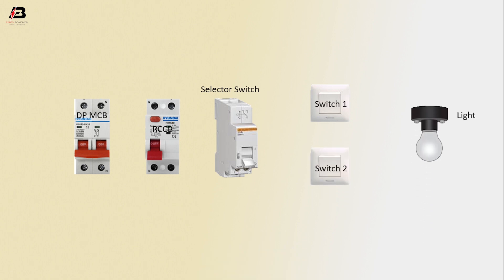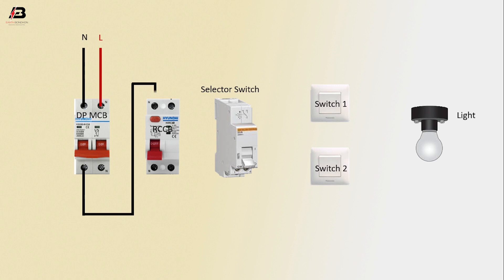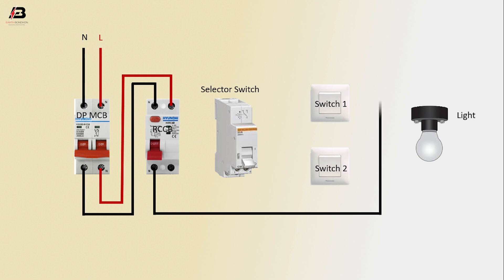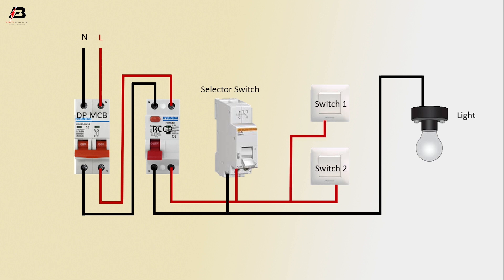Light neutral connection input to DPMCB Circuit Breaker. Face connection input to DPMCB Circuit Breaker. Neutral connection from DPMCB to connect RCCB. Face connection from DPMCB to connect RCCB. Neutral connection from RCCB to connect light neutral. Connection to Selector Switch. Face connection output from RCCB to Switch 2. Face connection to Selector Switch.